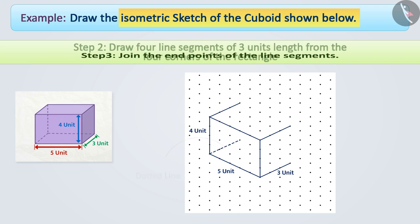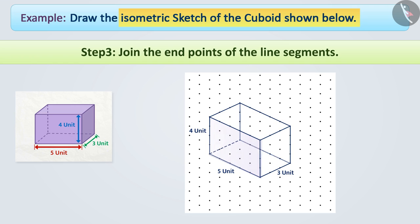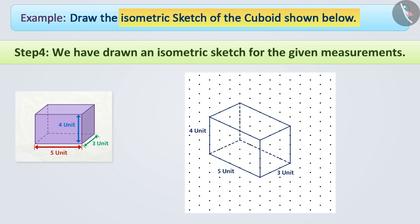Step 3: Now, we will join the end points of the line segments in this way so that we get the back part of the figure exactly the same as the rectangular face in the front. Step 4: In this way, we have drawn an isometric sketch for the given measurements.